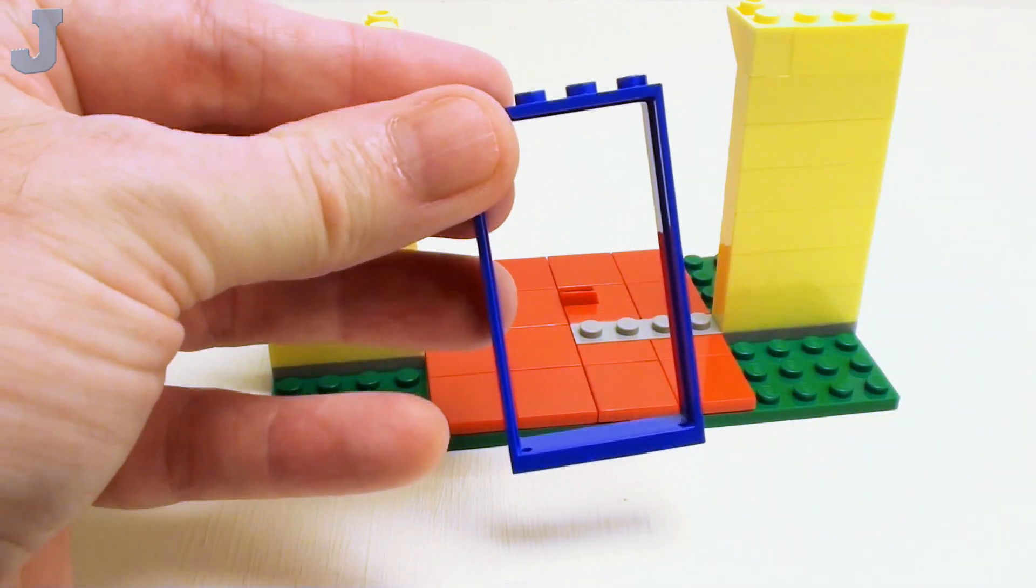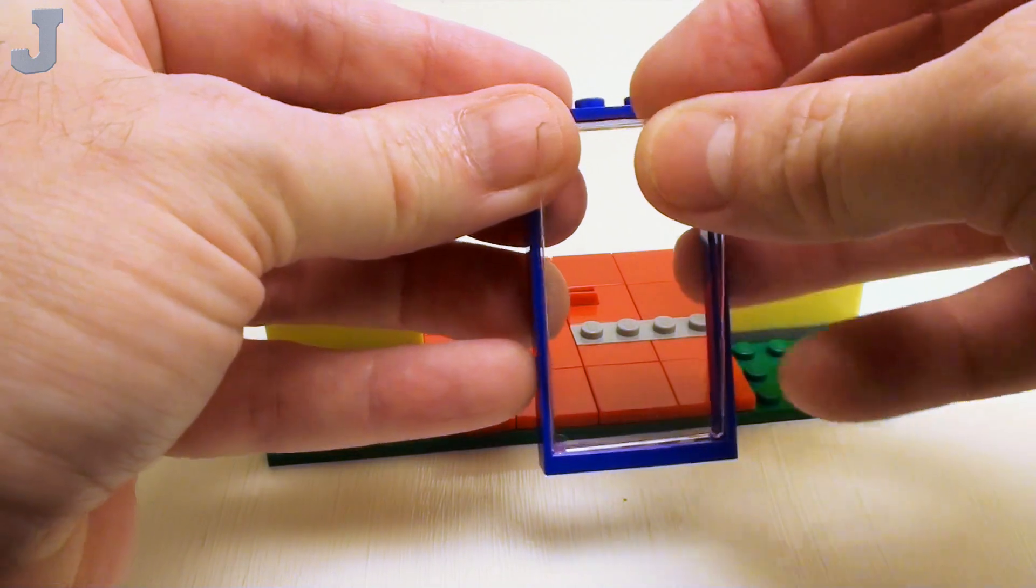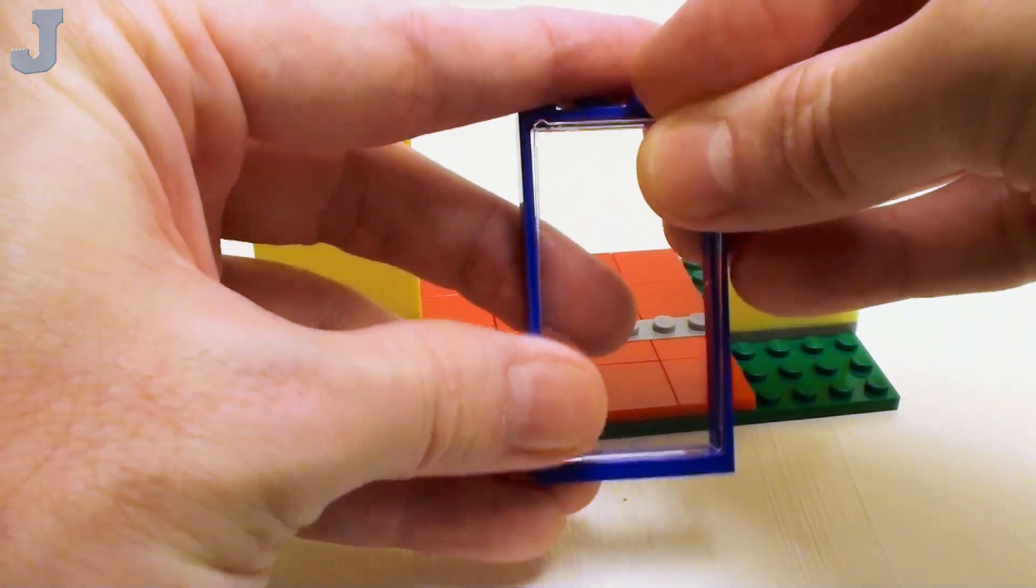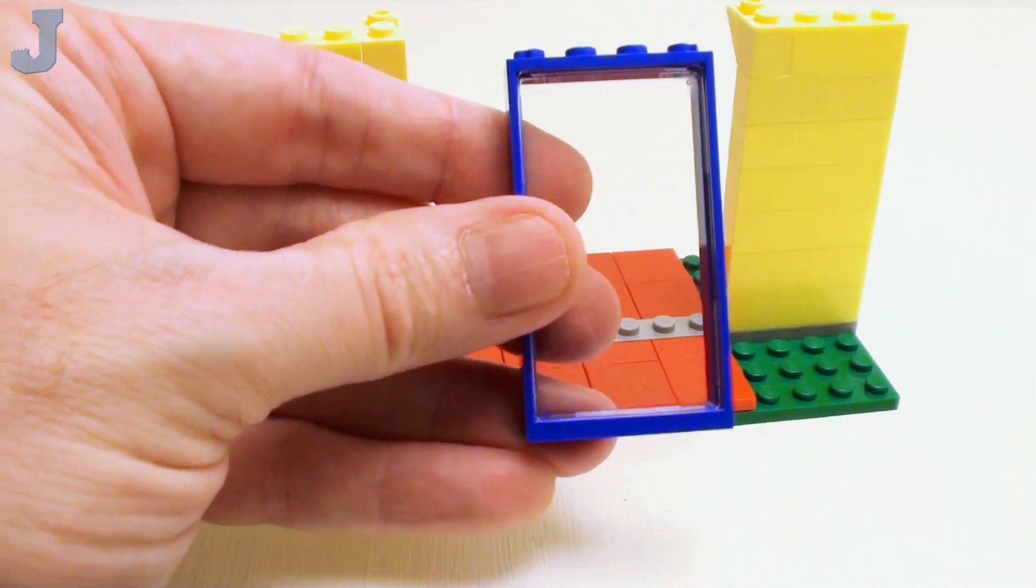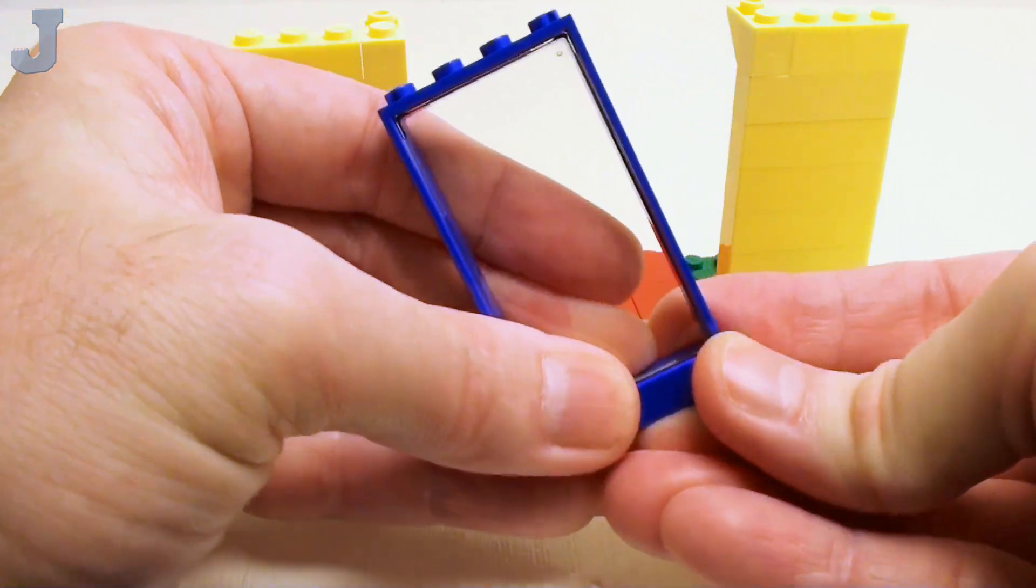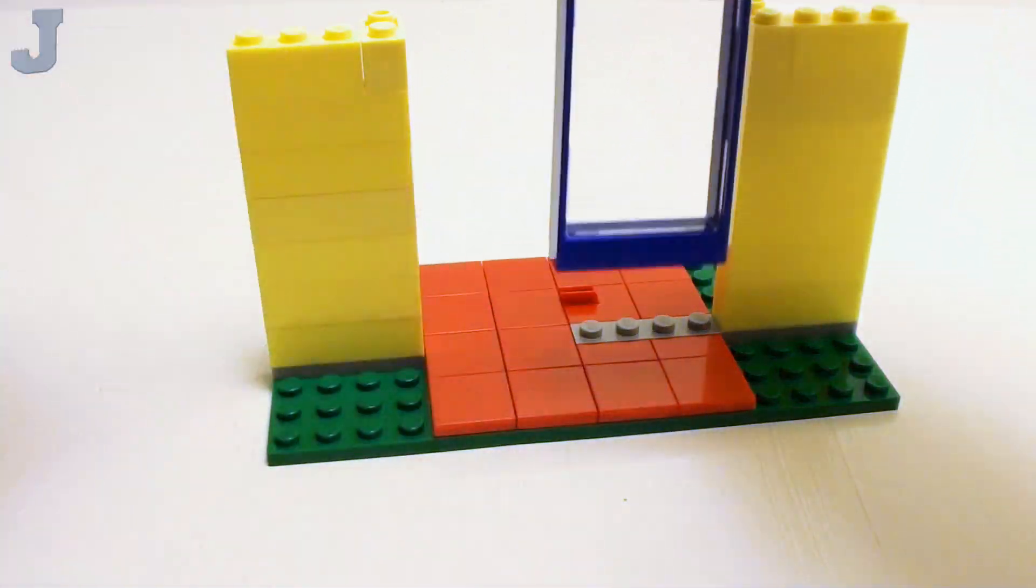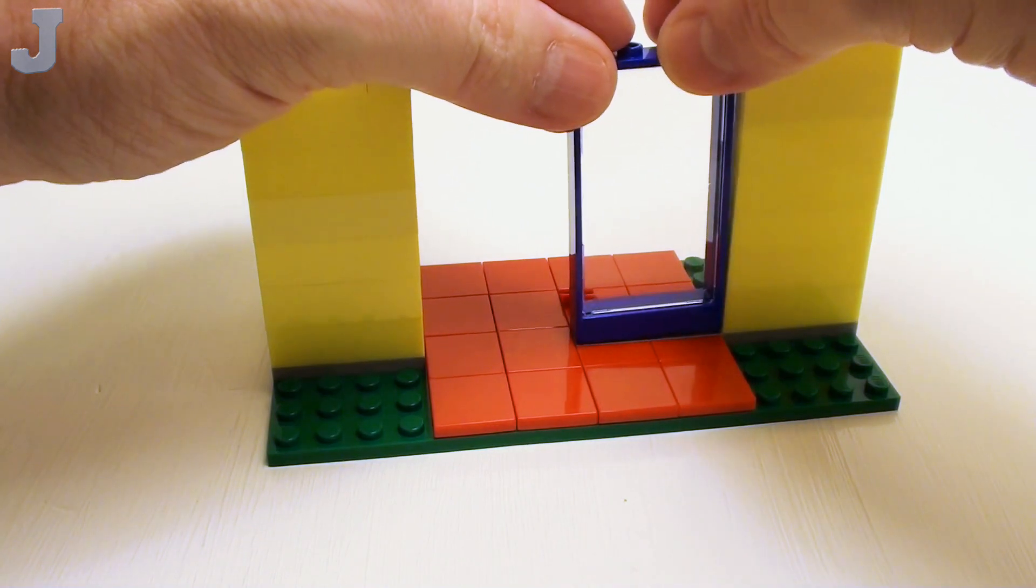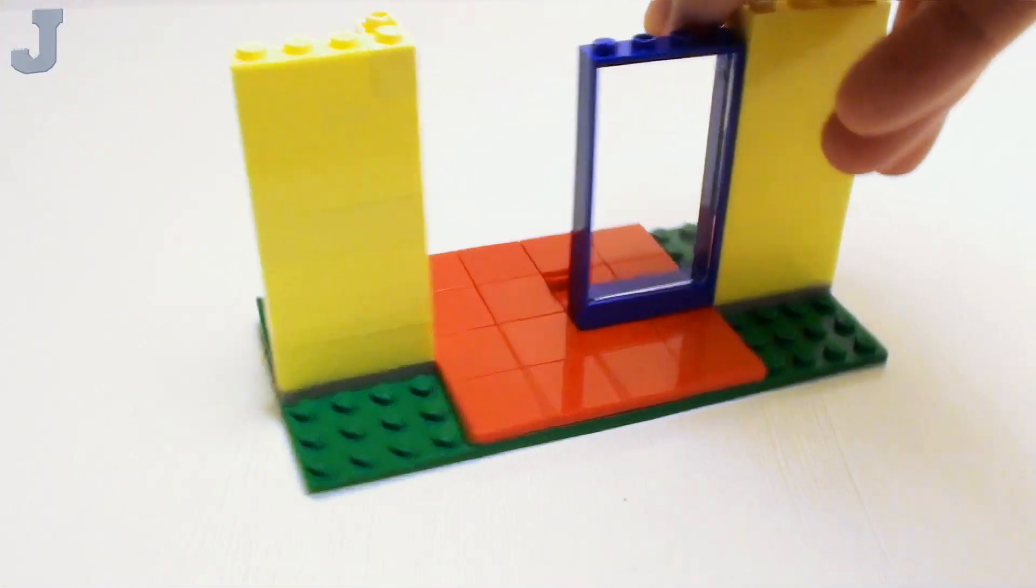For our stationary window, take a 1 by 4 by 6 frame. We're going to place a piece of glass inside the frame. And on the bottom, a 1 by 4 plate. We're going to place this right on top of the 1 by 8 plate. Now let's rotate this around.